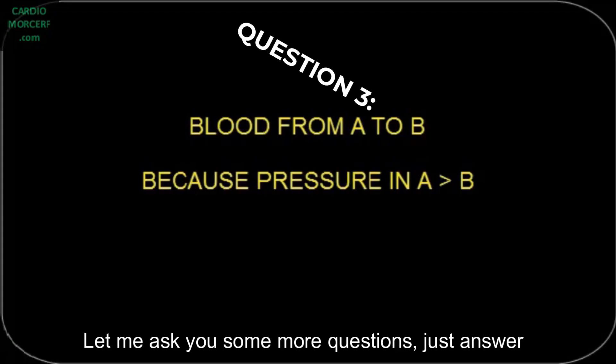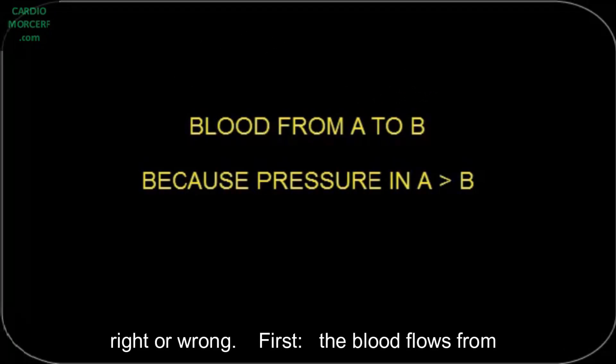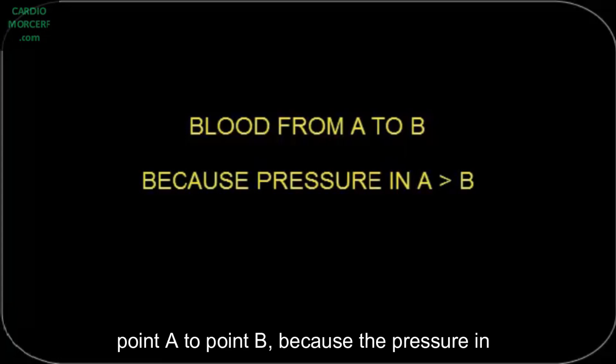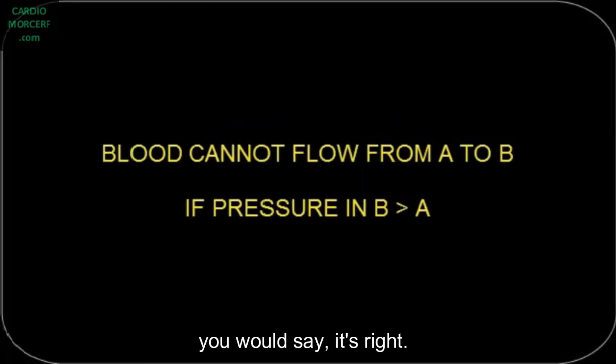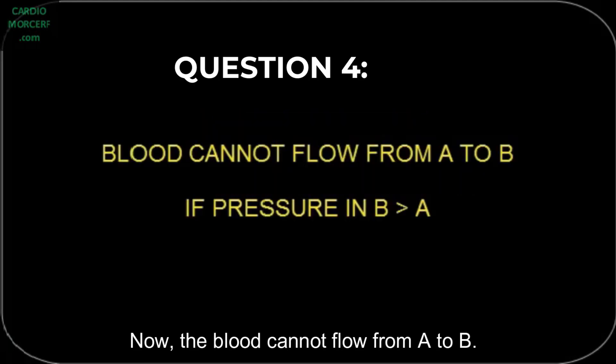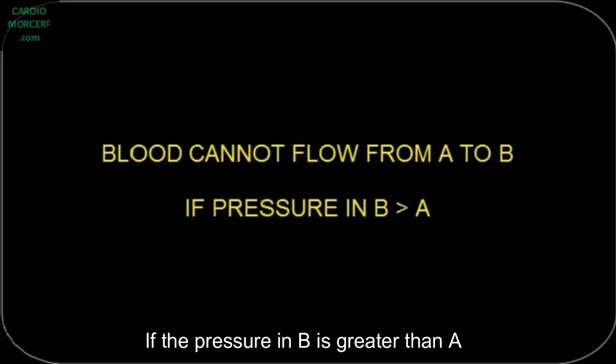Let me ask you some questions. Just answer, right or wrong. First, the blood flows from point A to point B, because the pressure in A is greater than B. Is it right or wrong? I believe most of you will say it's right. Now, the blood cannot flow from A to B, if the pressure in B is greater than A. Right or wrong? I believe most of you will say it's right.